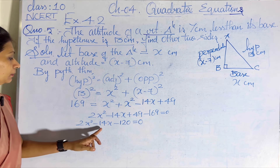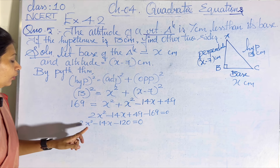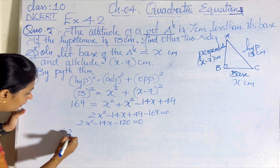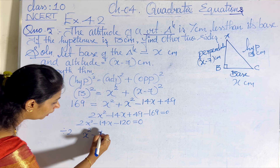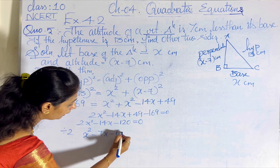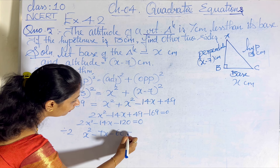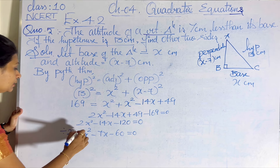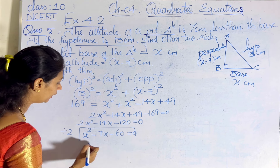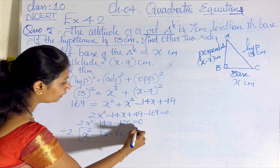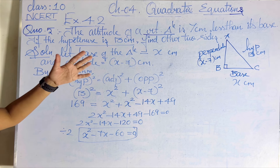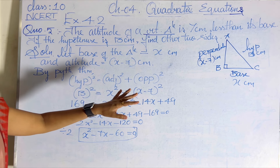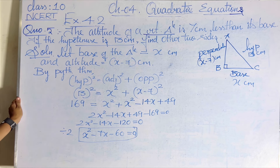Simplifying: 2x squared minus 14x minus 120 equals 0. All three terms are divisible by 2, so dividing through gives x squared minus 7x minus 60 equals 0. This is the required quadratic equation. Now we need to factorize it to find the zeros — that is, the base and the height of the right triangle.